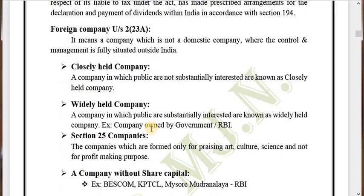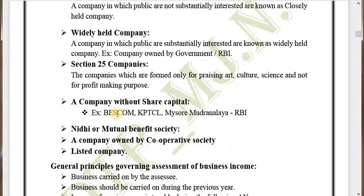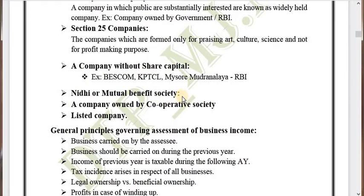Under foreign company we also have: closely held company — a company in which the public are not substantially interested; widely held company — a company in which the public are substantially interested, for example a company owned by the government or RBI. Then we have Section 25 companies — companies formed only for promoting art, culture, science, and not for profit-making. We also have companies without share capital like BEST, KSRTC, Mysore Mudrana, RBI, mutual benefit societies, companies owned by cooperative societies, and listed companies.